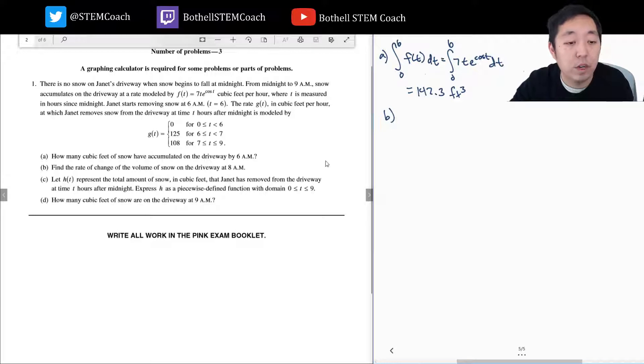Find the rate of change in the volume of snow on the driveway at 8 a.m. The rate of change in the volume of snow - first of all, the amount of snow is given by f(t). This is the rate it's adding, minus g(t), the rate that is leaving. This is the rate that is accumulating. So the rate of change is how much is adding minus how much is taking away.